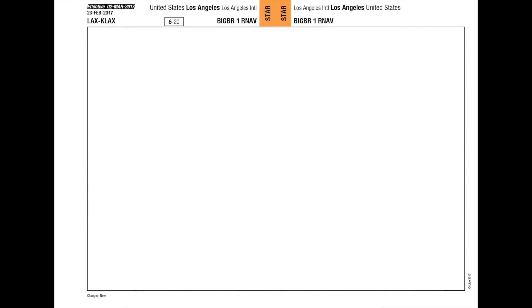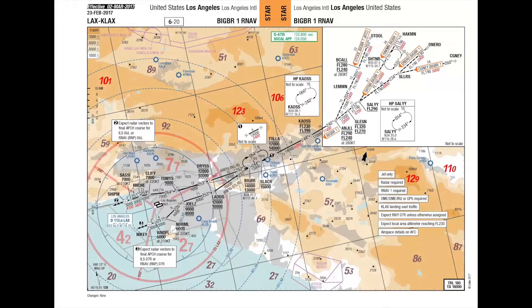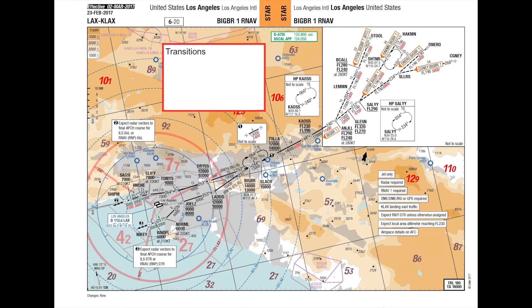Let's have a look at the page frame of a standard arrival route chart. For easy identification, all STAR and arrival charts are color coded orange. Temporary STAR and arrival charts are color coded orange and white. All Leader page numbers consist of a chapter number followed by a sequential number within the chapter. STAR pages are in chapter 6, numbered from 10, and found after the SID procedure text pages. To help pilot navigation to the correct procedure, the order of STAR charts is as follows: Transitions, RNAV, RNAV Overlay, Conventional, Prop Only, RNAV RNP or RNPAR.